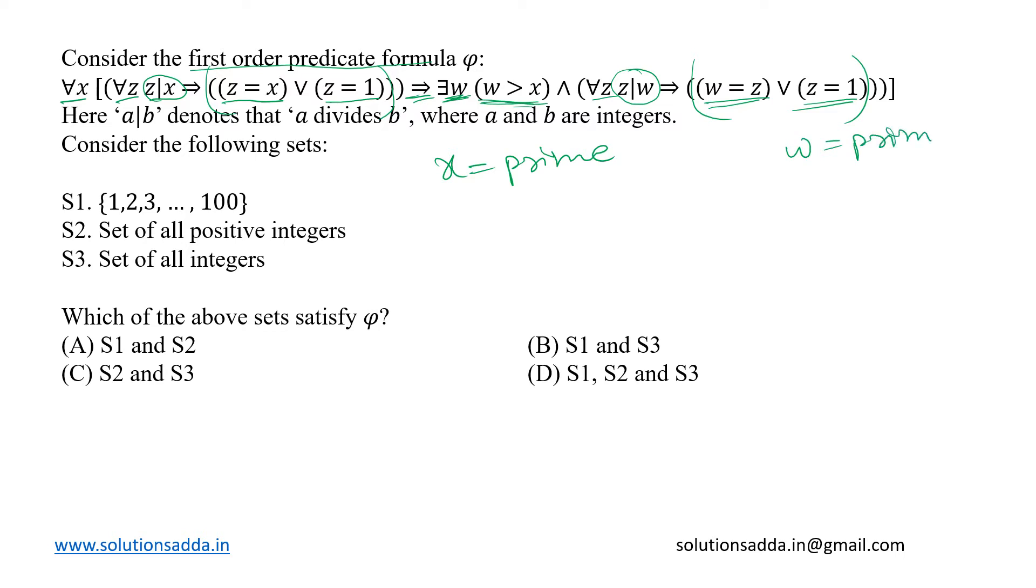So combining both parts together, it is simply saying that if x is a prime number, then there exists a w such that w will be greater than x and w will also be a prime number.